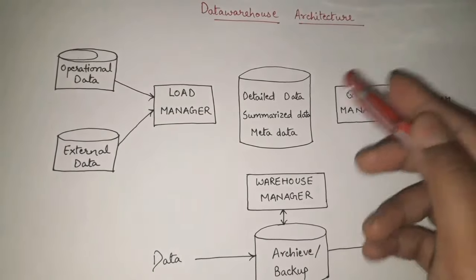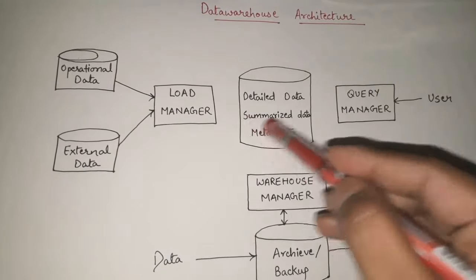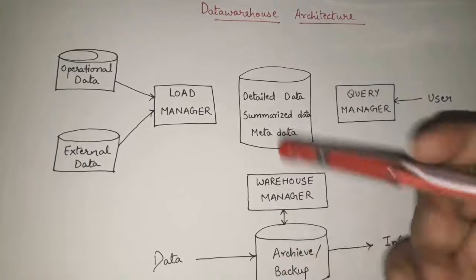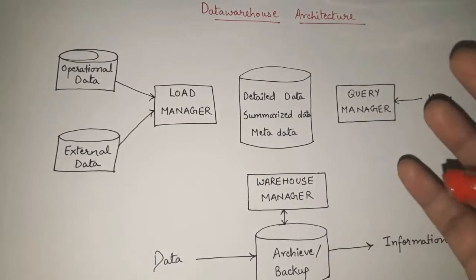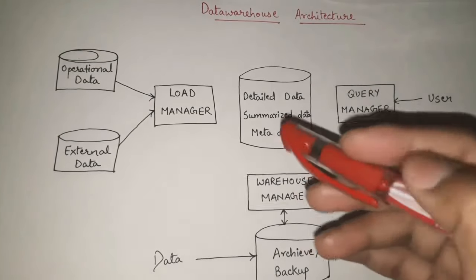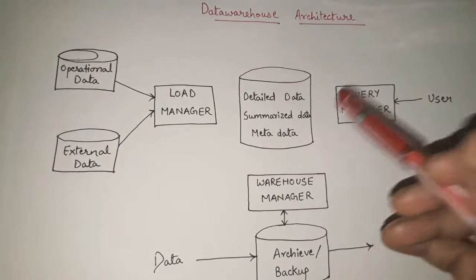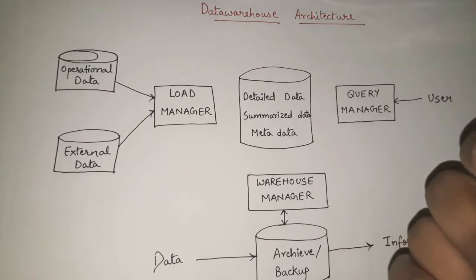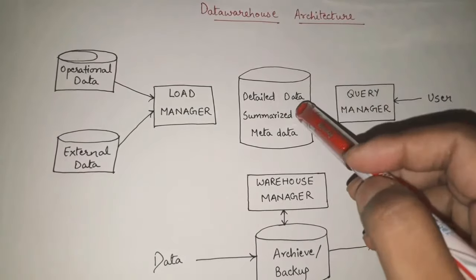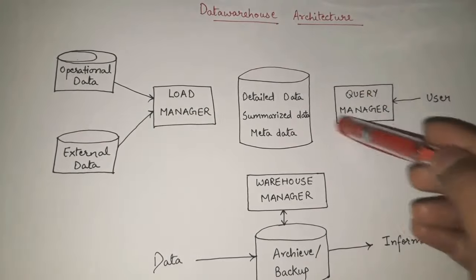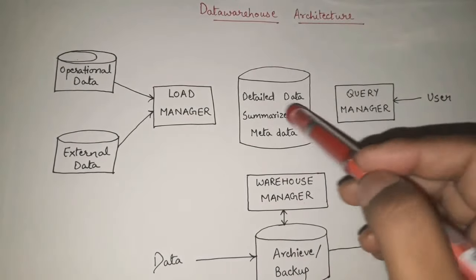So the summarized data works like cache memory. Just as cache memory allows quicker access, whenever the Query Manager receives a query it first tries to find the result from the summarized data. If it gets the result from the summarized data, it can return the result very quickly. This saves time so the Query Manager doesn't need to do extensive searching in the detailed data every time.